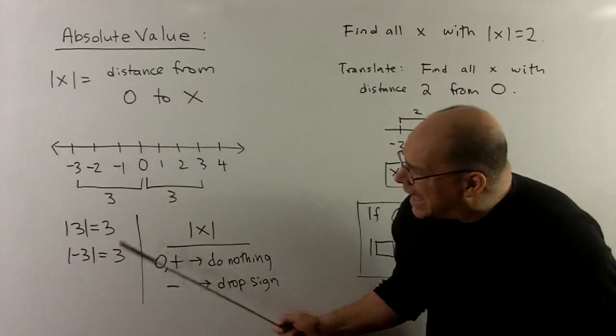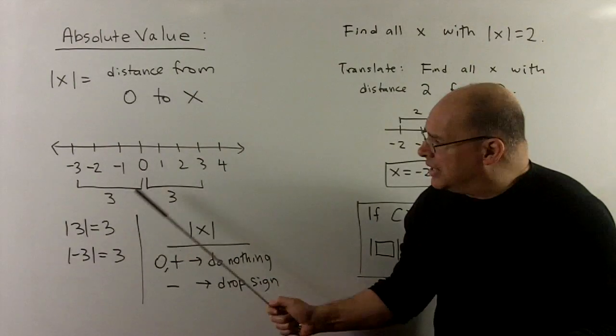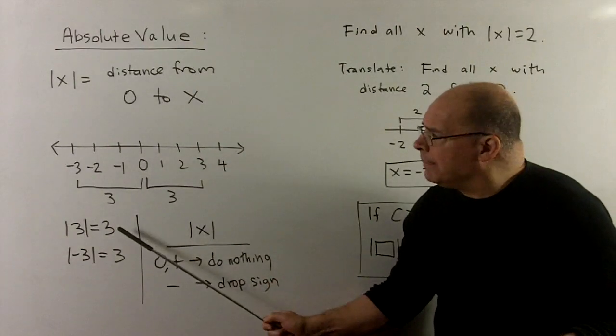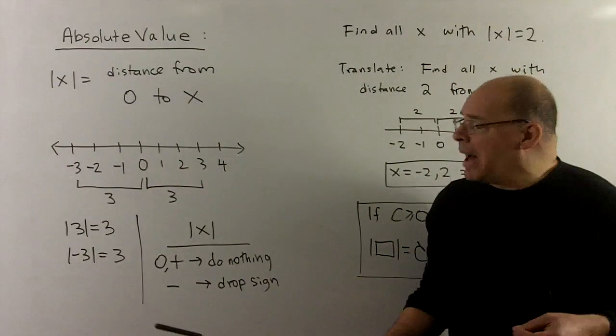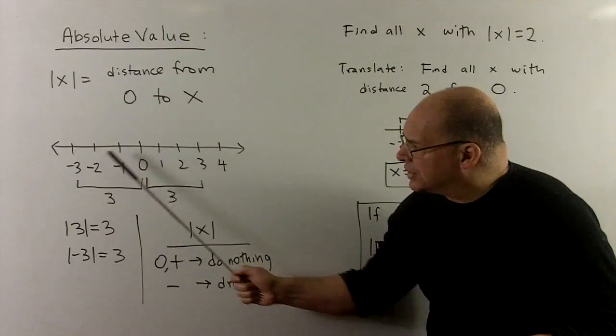So if I take the absolute value of 3, we have our number line here, I pin down 0, distance from 0 to 3 is 3. If I want the absolute value of minus 3, distance from 0 to minus 3, that's still going to be 3.